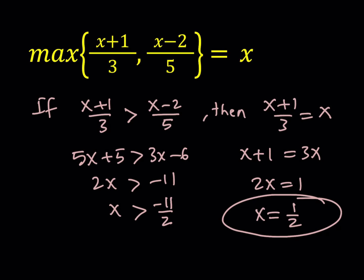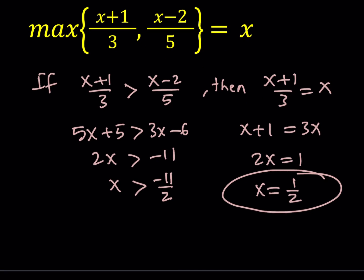And you can definitely check that. For example, if you replace x with 1 half, you're going to get the following. So if I replace x with 1 half, I get 1 half plus 1, which is 3 halves. If you divide it by 3, you're going to get max of 1 half, comma. And in the second one, if you replace x with 1 half, you're going to be getting something like 1 half minus 4 halves, which is negative 3 halves. Divide by 5, it's going to be negative 3 tenths. And obviously, the maximum of these two numbers is going to be 1 half, which happens to be the x value. So x equals 1 half, you don't have to do this, but if you want, you can. So x equals 1 half is a valid solution.